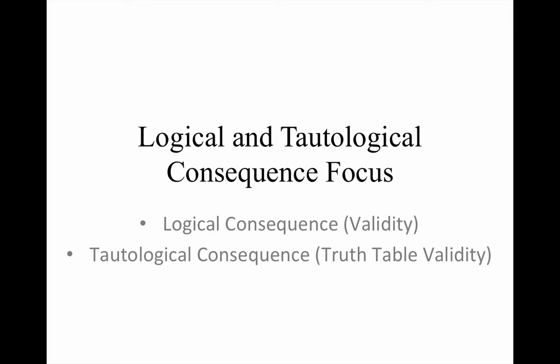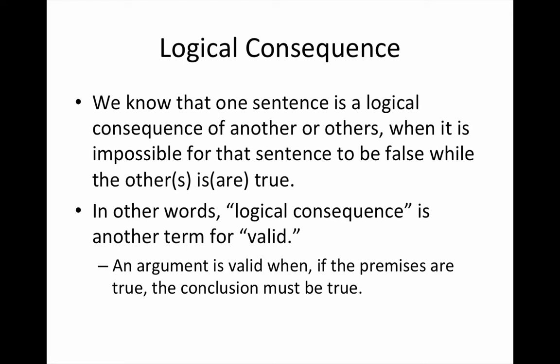What we mean when we say that an argument is valid. We know that one sentence is a logical consequence of another or others when it is impossible for that sentence to be false while the other or others are true. The phrase logical consequence is synonymous with the term valid. So an argument is valid when it's impossible for the conclusion to be false if the premises are true. A sentence is a logical consequence of another or others when that sentence can't be false if those other sentences are true.